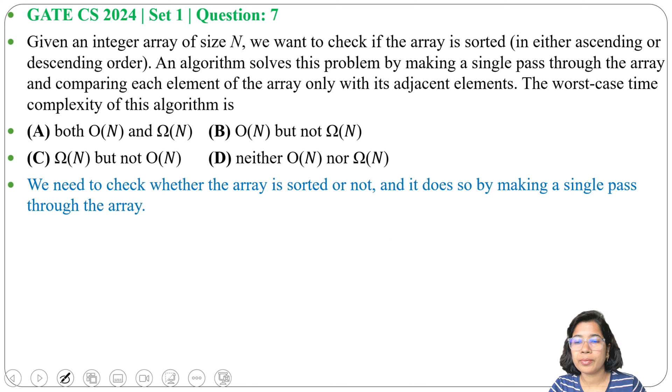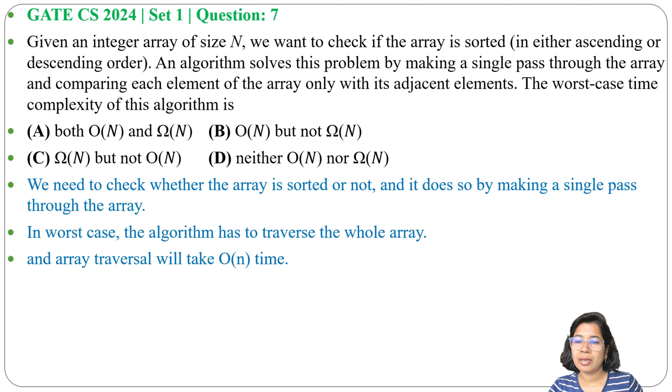So here answer will be option A: both O(n) and Ω(n). Ω(n) means it may be greater than or equals to n, and O(n) means it may be less than or equals to n. Answer is option A: both O(n) and Ω(n).